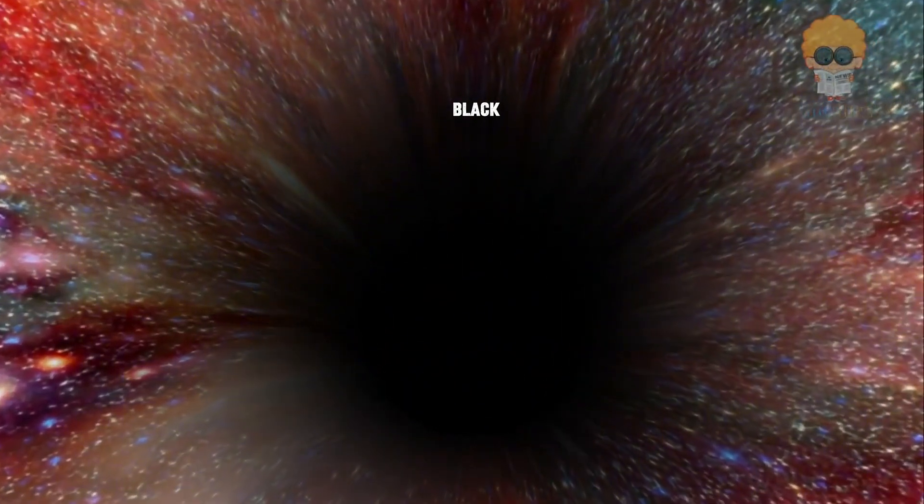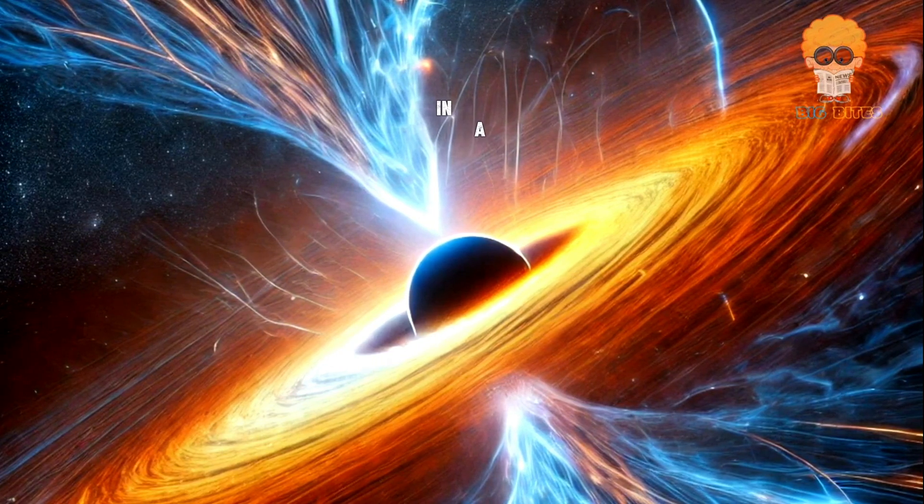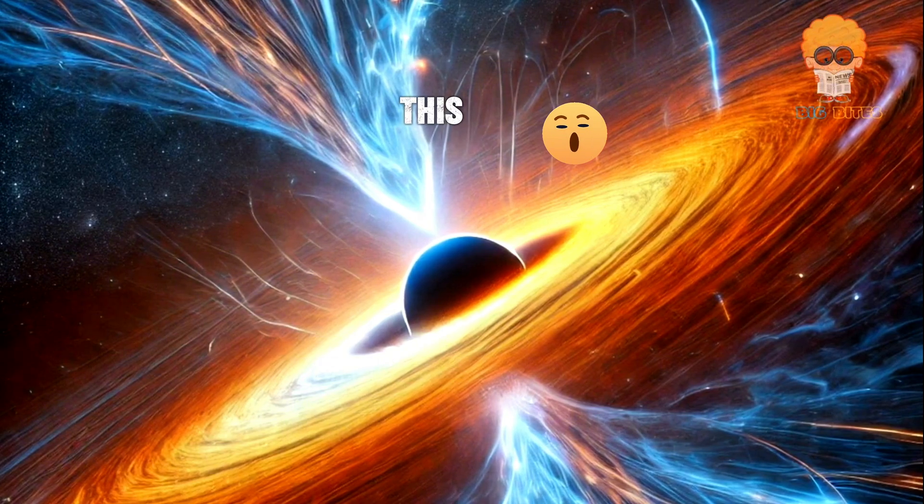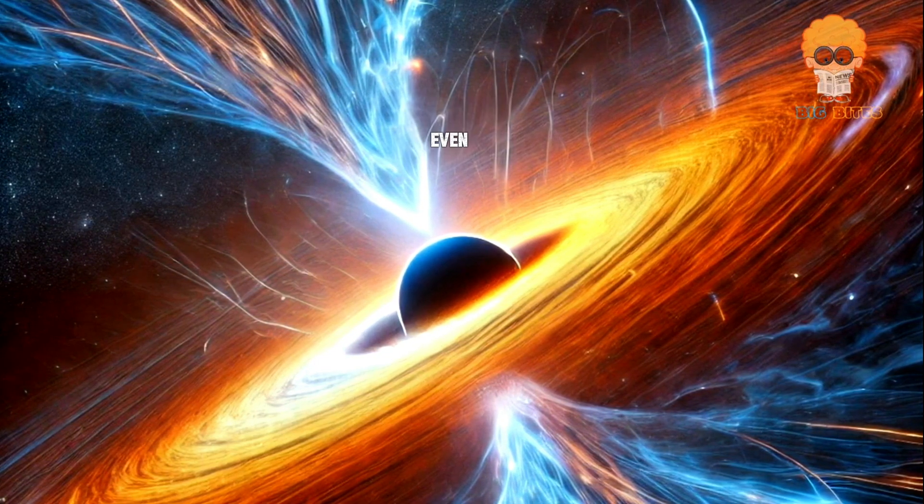However, not every black hole is a blazar or a quasar. Only the ones that are actively feeding on material, in a process known as accretion, produce these powerful jets. This process creates an immense amount of radiation, making blazars visible even at great distances, often outshining the rest of their galaxy.